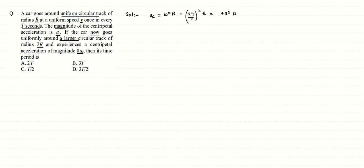We know the formula for centripetal acceleration is ω²r, where ω is the angular velocity. And ω can be written as 2π divided by capital T. So the formula becomes (2π/T)² times r, which simplifies to 4π²r divided by T². The factor 4π² remains constant throughout.